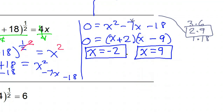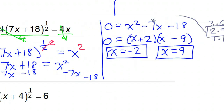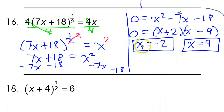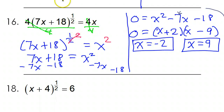Now I need to check both of these to make sure I'm not getting imaginary numbers. If I put negative 2 in, I have a bad feeling about it. If I put negative 2 on the right, that's going to make negative 8. And then I have this radical equal to a negative number — right there that means it's going to be extraneous.